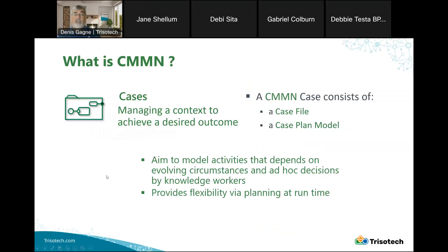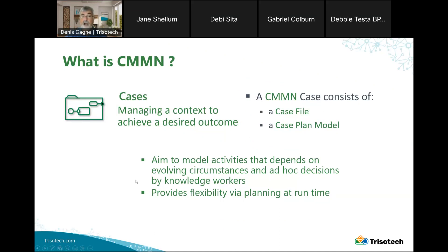Fundamentally, CMMN is about managing a context to achieve a desired outcome, and the context here is the case file. The case in CMMN consists of a case file and a case plan model. The case plan model is there to help the knowledge worker figure out what possible next action would be ideal in this context, but the activities are really decided by the knowledge worker. It provides a lot of flexibility, and everything is done at runtime rather than predefined at design time, as in the case of BPMN.